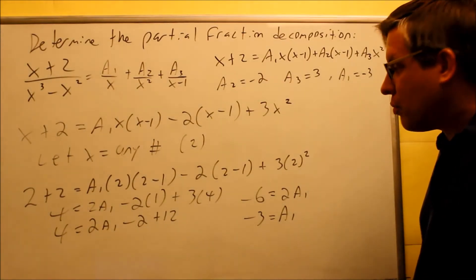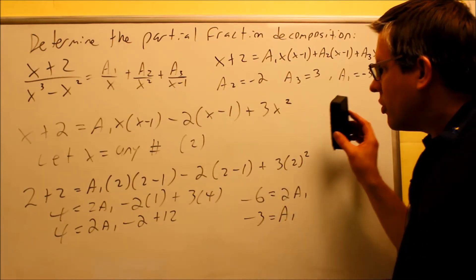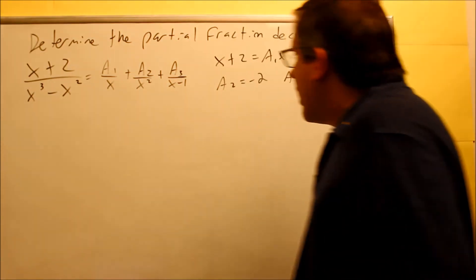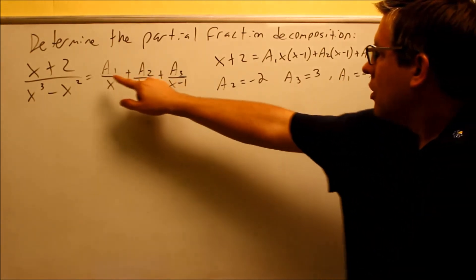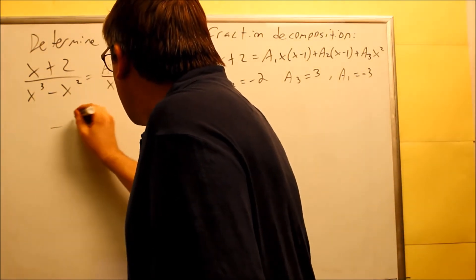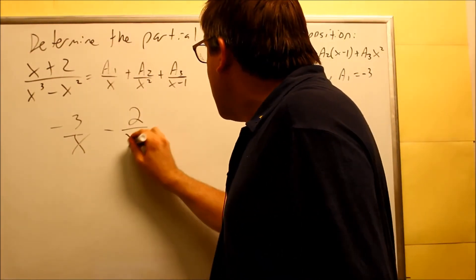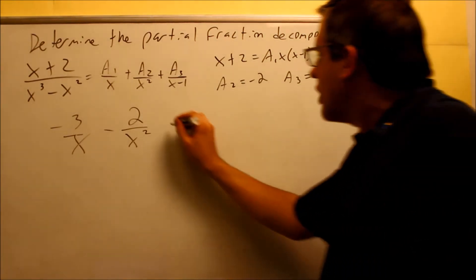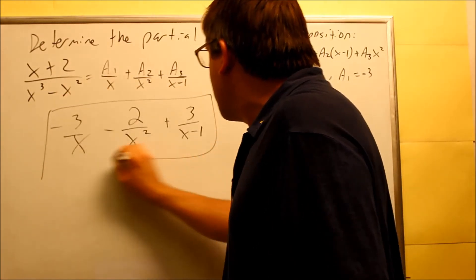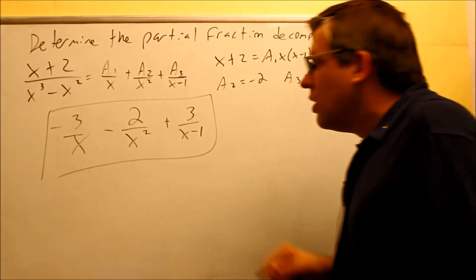The very last thing is to write the final answer by substituting all values back into the original setup. a1 was negative three, so I get negative three over x. a2 is negative two, so that's minus two over x squared. And a3 was three, so I have plus three over x minus one. That is the final partial fraction decomposition — we took the original fraction and split it into these three separate fractions.